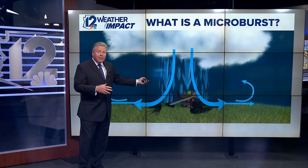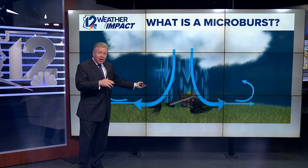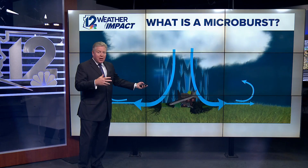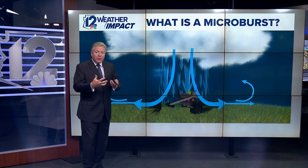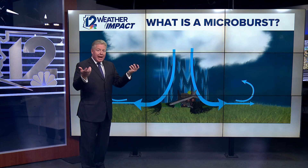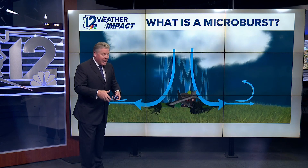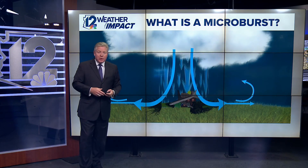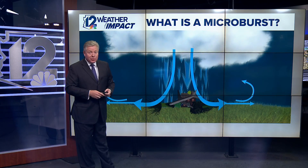That's what we had going on yesterday, and what we typically see during the monsoon with strong thunderstorms, strong updrafts, and strong downdrafts. And that's what caused this microburst in Tempe yesterday.